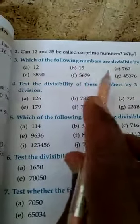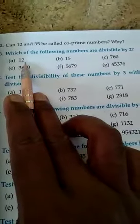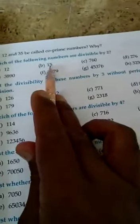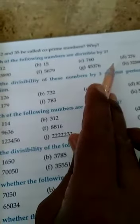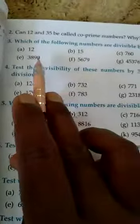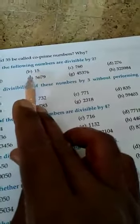Now question number 3: which of the following numbers are divisible by 2? You already learned the divisibility rule — if the ones place digit is 0, 2, 4, 6, or 8, then it is divisible by 2. So A is divisible by 2 because the ones place is 2. B is not divisible by 2 because the ones place is 5. In this way you will solve the other questions — all even numbers are divisible by 2 and all odd numbers are not divisible by 2.